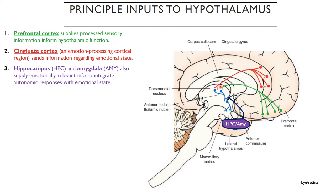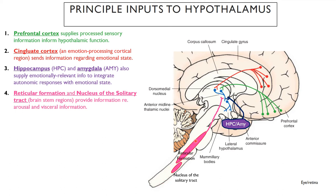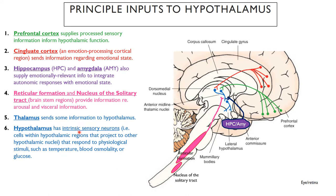Also providing input to the hypothalamus are the reticular formation and the nuclei of the solitary tract, which provide information about arousal and visceral information — telling you whether you're hungry or feeling sick — influencing hormone secretion and overall autonomic responses. The hypothalamus also has internal integration centers that allow it to respond to physiological stimuli such as temperature, blood osmolality, or glucose, with distinct homeostatic regulation centers integrated within the hypothalamus itself.